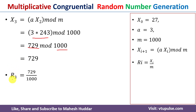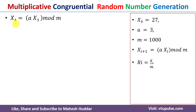Now we need to calculate R₃. R₃ = X₃ / m = 729 / 1000 = 0.729. This is the fourth random number. Now we need to calculate X₄.